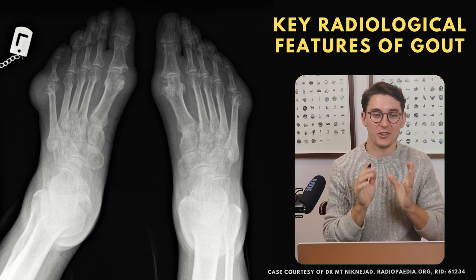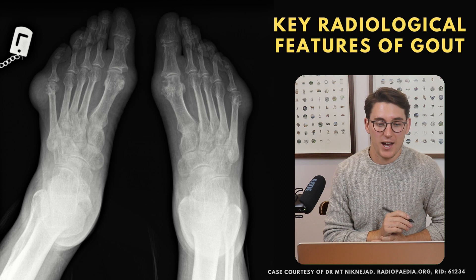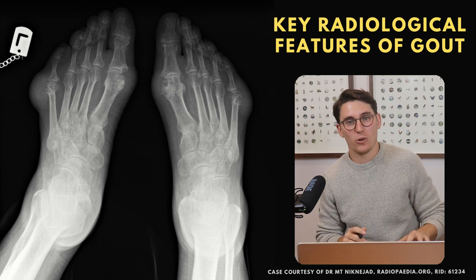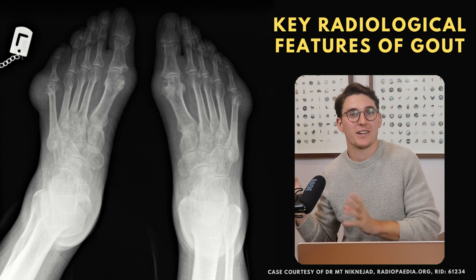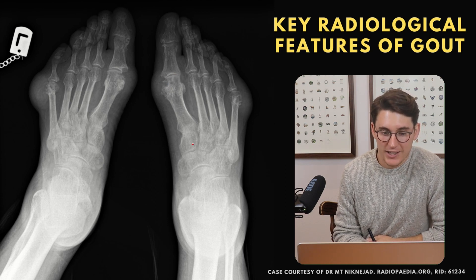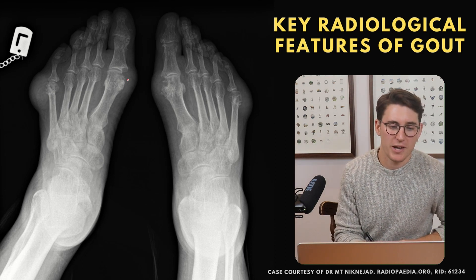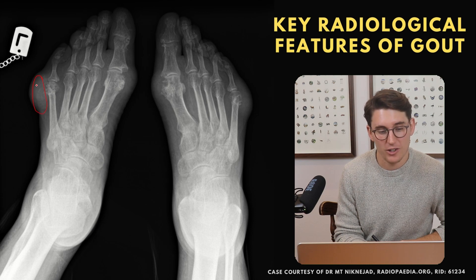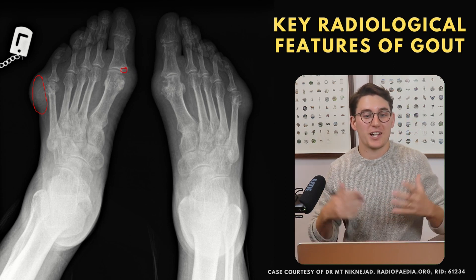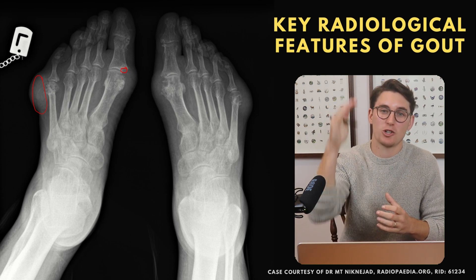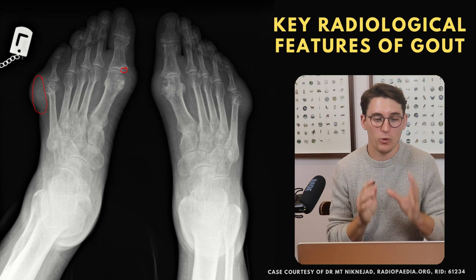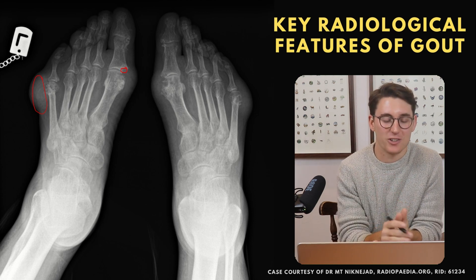We go back to the first image shown at the start. Hopefully by now you can look at this and say this is definitely gout. We've got an asymmetric distribution of lesions — another key feature, as gout doesn't have to be symmetrical. We have juxtaarticular lesions with preservation of the joint space, healthy bones with no osteopenia, soft tissue swelling with some calcium deposition, a large tophus, and punched-out lesions with overhanging pieces of bone and sclerotic margins. When you see these features, gout needs to be at the top of your differential — especially with predisposing clinical factors increasing your pre-test probability.